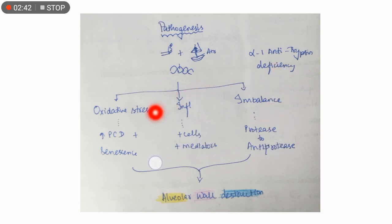Alpha-1 antitrypsin deficiency mainly causes protease anti-protease imbalance along with oxidative stress, which causes increased programmed cell death, apoptosis, and senescence. Inflammatory cells and mediators and imbalance between protease and anti-protease together cause alveolar wall destruction, which is the main pathogenesis of emphysema.